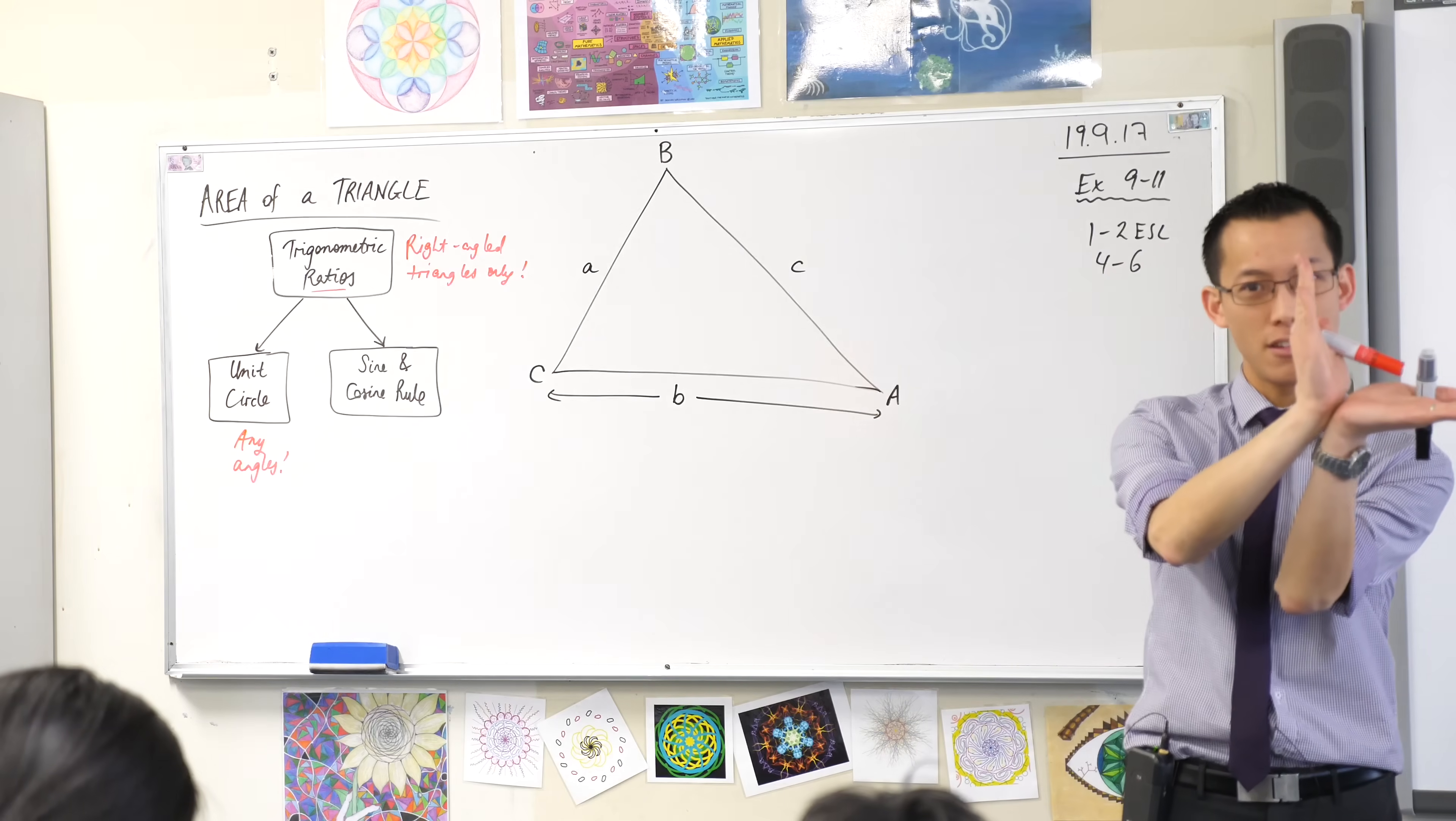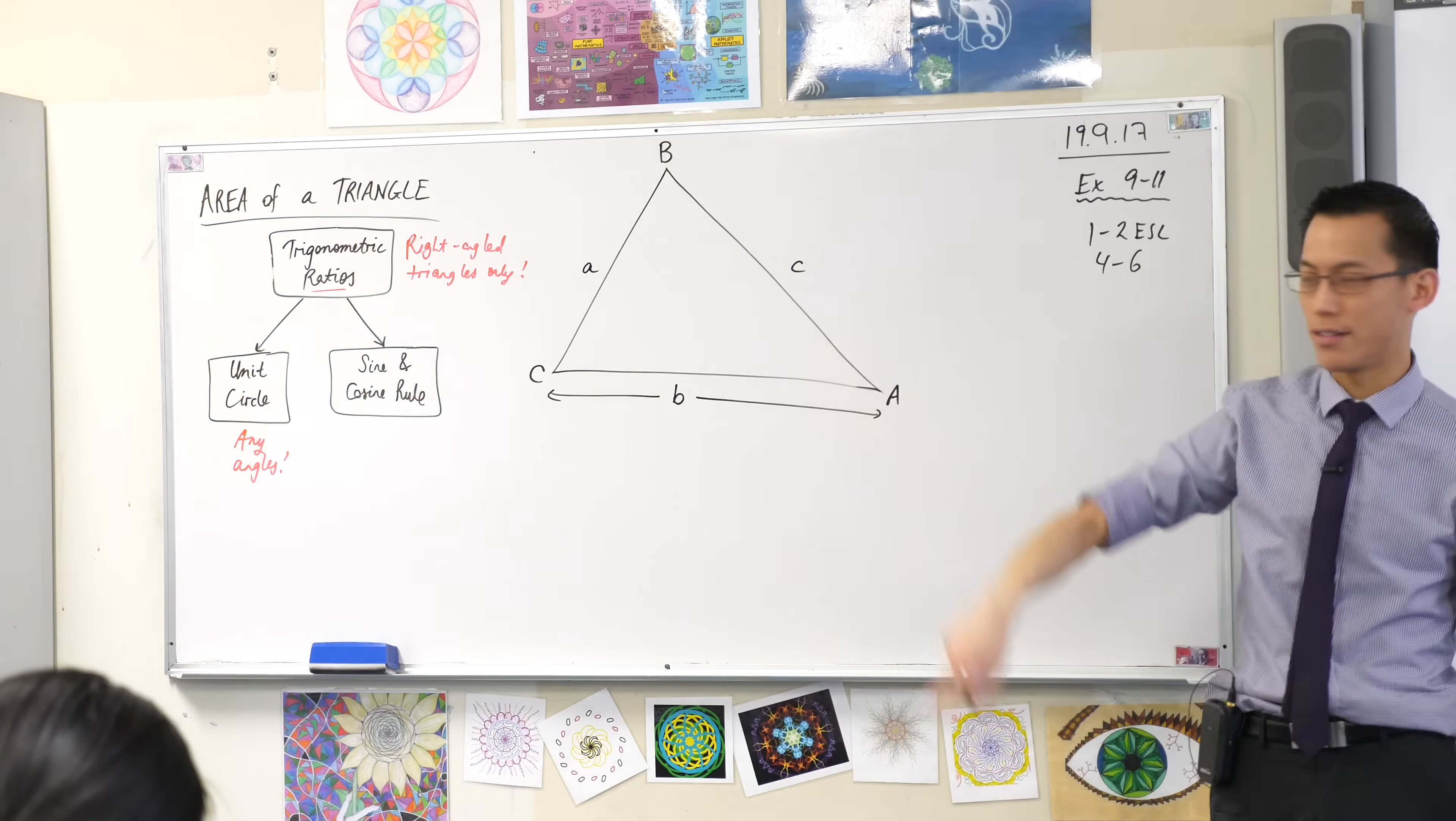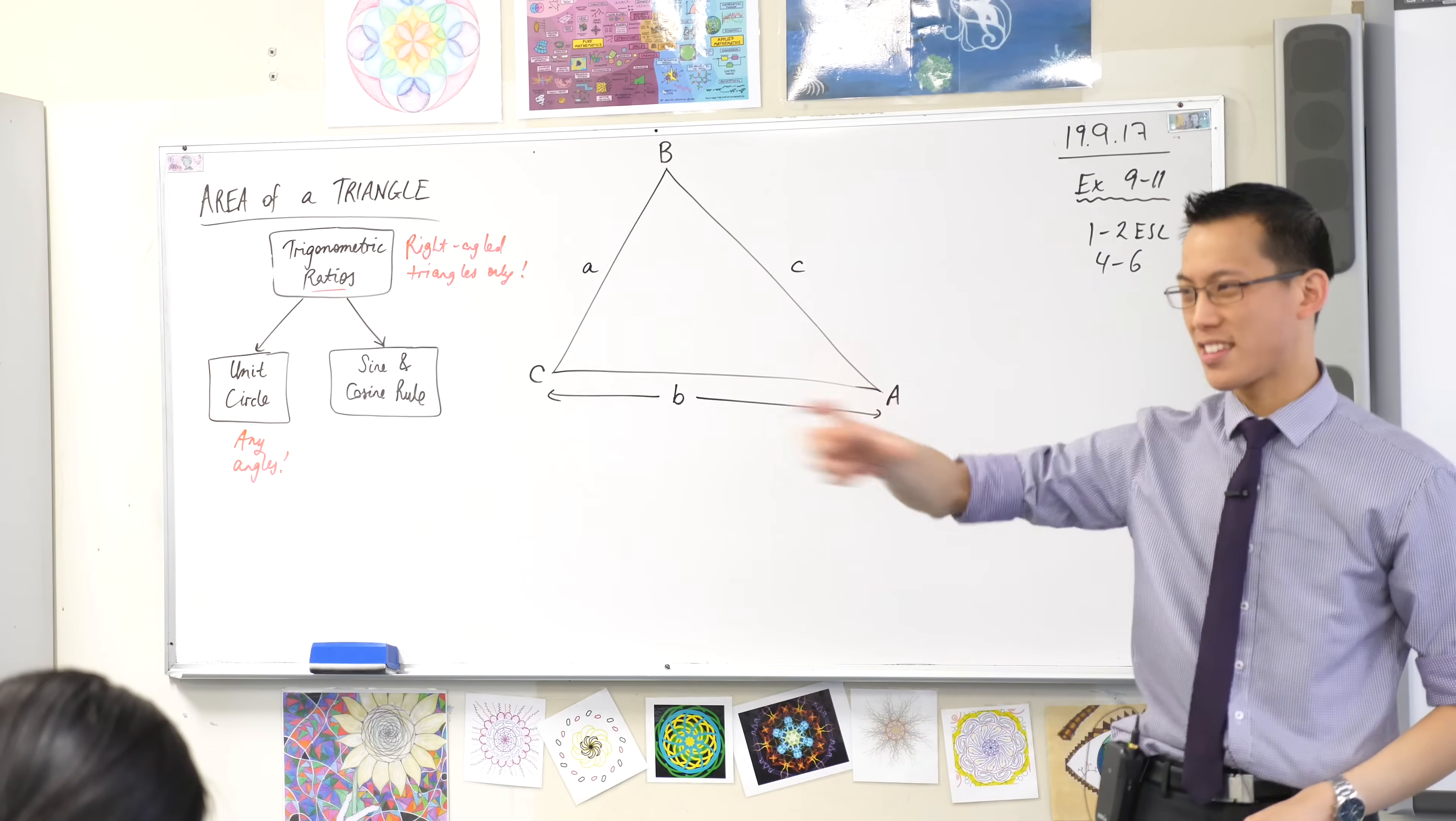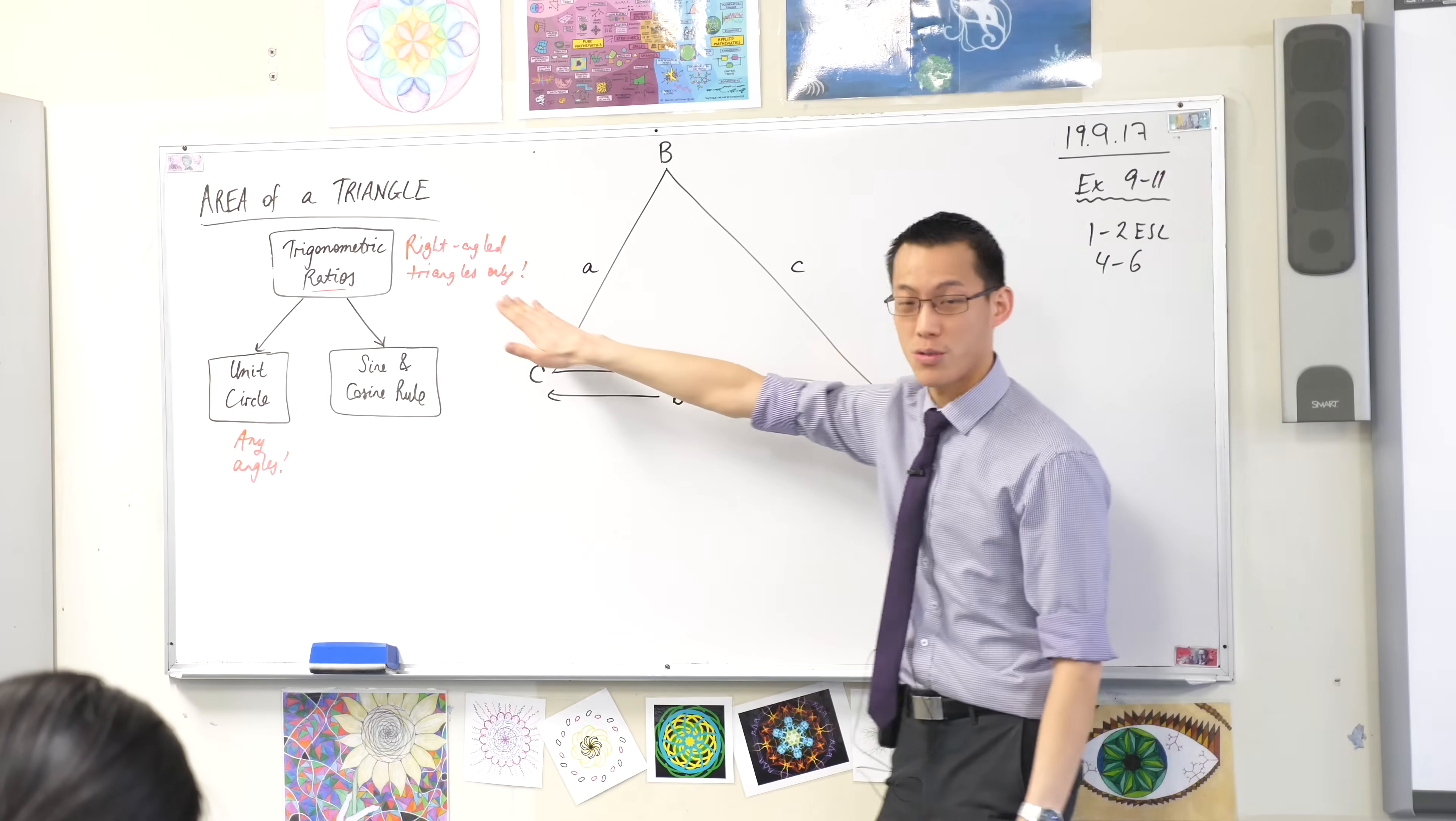You're not limited from 0 to 90. You can go 90 to 180 or 180 to 270, all the way around. You can put in any angle you like. So you can go to your calculator and type in sine 135 and be like, oh, that's a thing. So you're outside these right angled triangles.